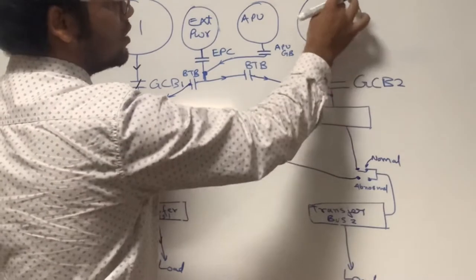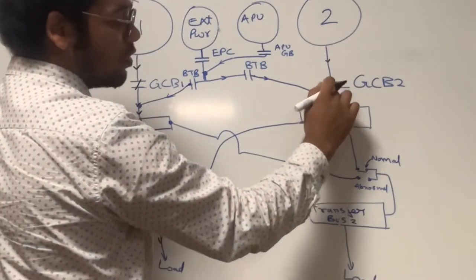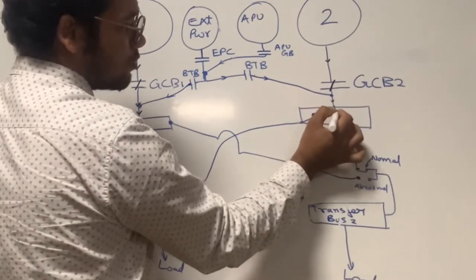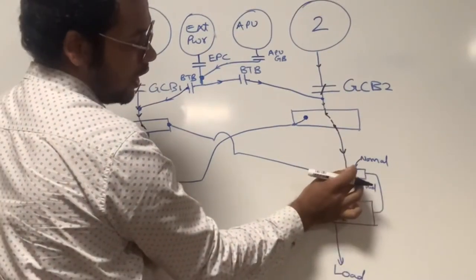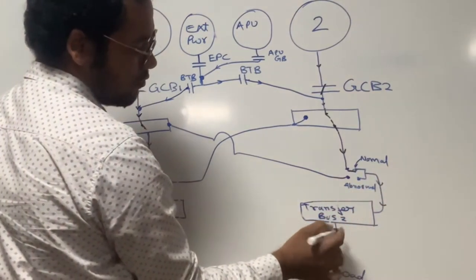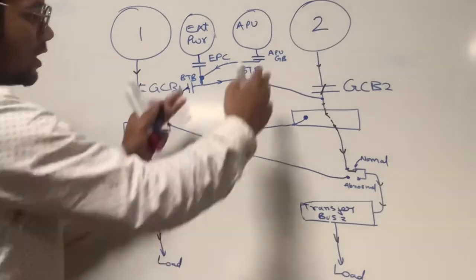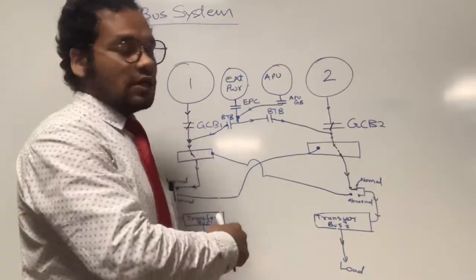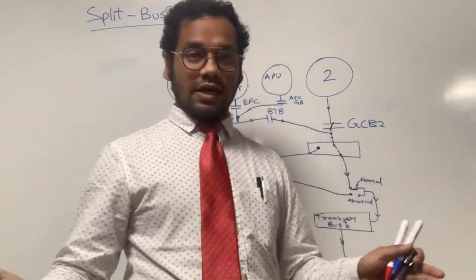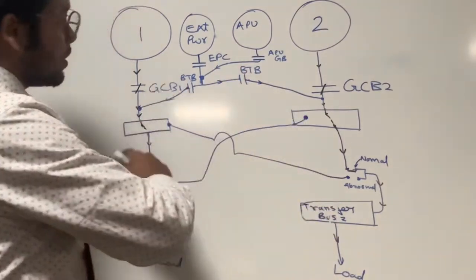Likewise on the number two side, when generator number two is running, the current flows through its closed GCB2 to the number two main bus bar. From this bus bar, through the normal contact of the transfer relay, supply goes to transfer bus number two, which distributes supply to the load. In normal operation, number one and number two sides are operating independently — that is what 'split' means. They are not joined together; they are separate and independent.